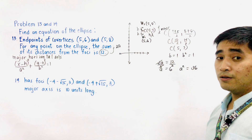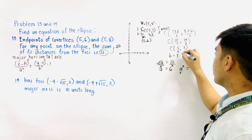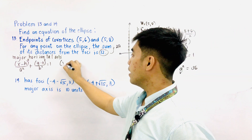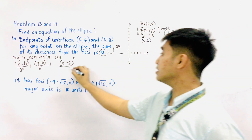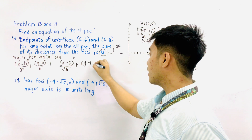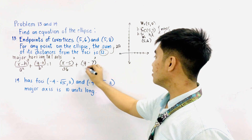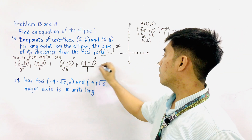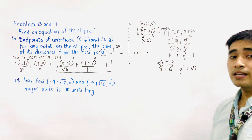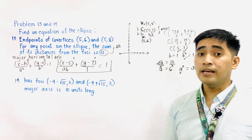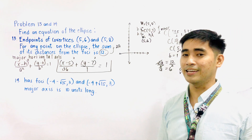We are now ready to substitute all the given values into our equation. We have a squared, b squared, and h and k. So the equation becomes: (x − 5)²/36 + (y − 7)²/1 = 1. This is the standard equation of an ellipse having endpoints of the co-vertices located at (5, 6) and (5, 8), where for any point on the ellipse, the sum of its distances from the foci is 12.